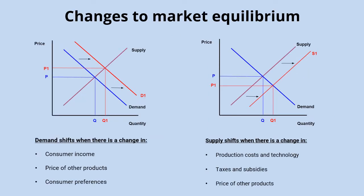As conditions in the market change, the equilibrium changes too. For example, an increase in consumer income shifts the demand curve to the right. If the price stayed the same at P, quantity demanded would exceed quantity supplied, creating a shortage. This pushes the market price up to P1, and we reach a new equilibrium at a higher price P1 and higher quantity Q1.